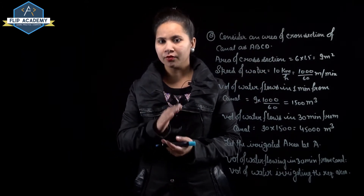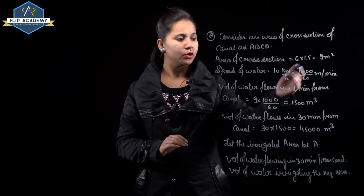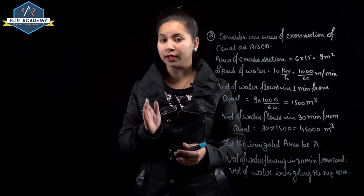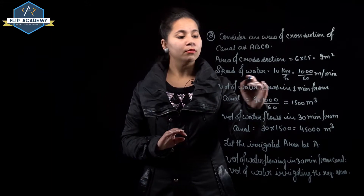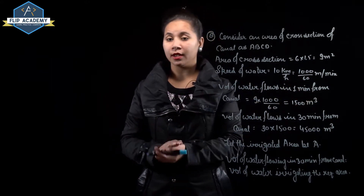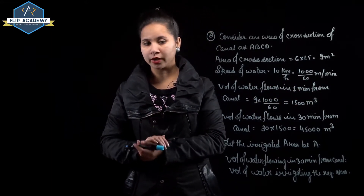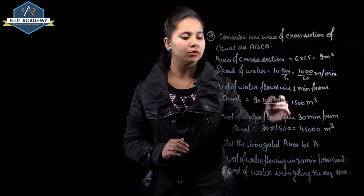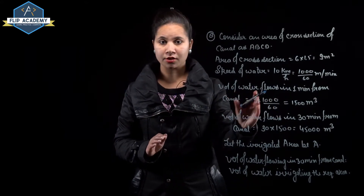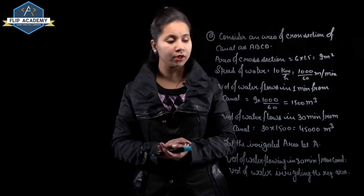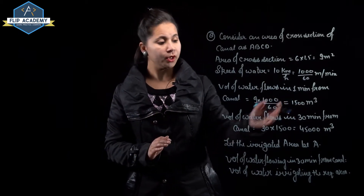Convert speed to meters per minute: 10 km/hr = 10000/60 m/min. Volume of water flowing in 1 minute = area of cross section × speed = 9 × (1000/60) = 150 m³ per minute.